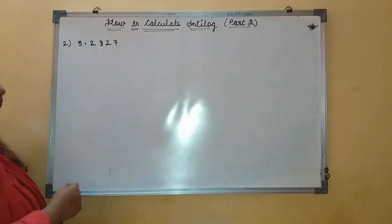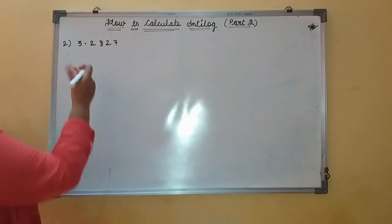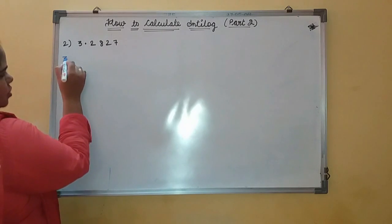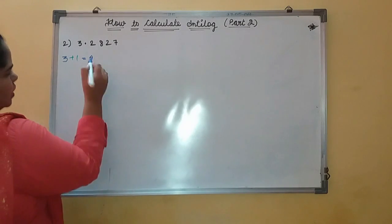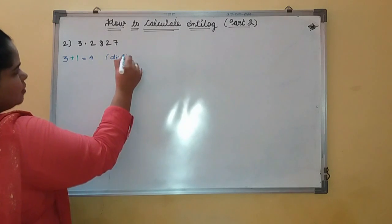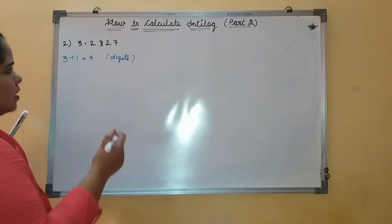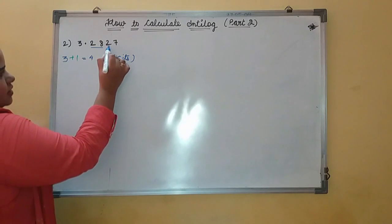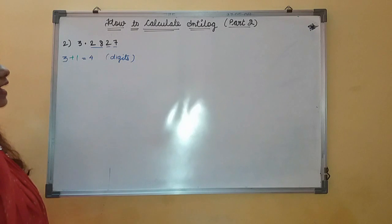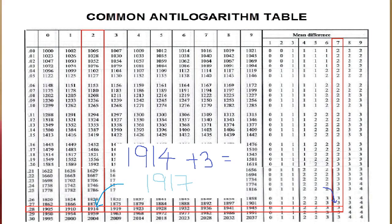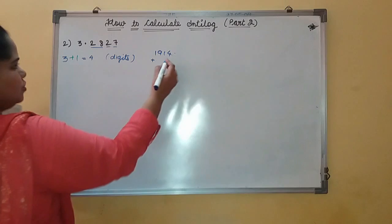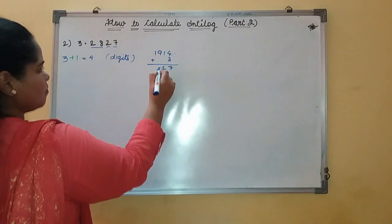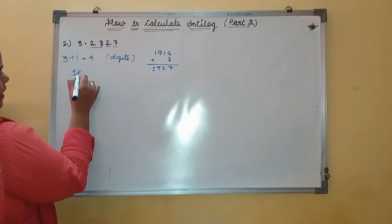This is the second example. Take the original number which occurs before the decimal point, which is 3. Then by the rule of antilog, add 1 — you will get 4. That means after 4 positive digits places the decimal point will occur. Take these digits and use them for finding antilog in your antilog table. Find antilog of 0.28 in column 2 and mean difference 7. In column 0, it is 1914, and add mean difference 3. So you get 1917.